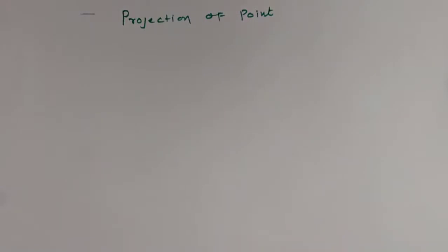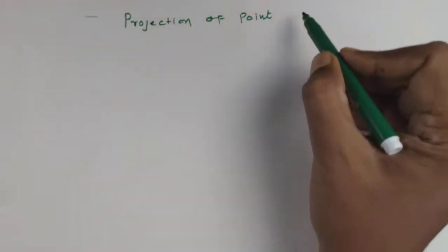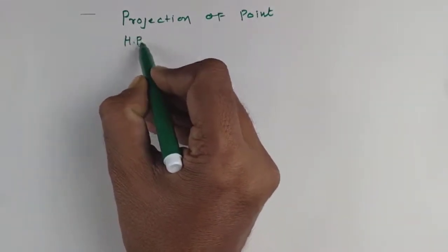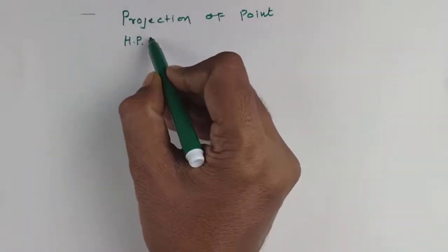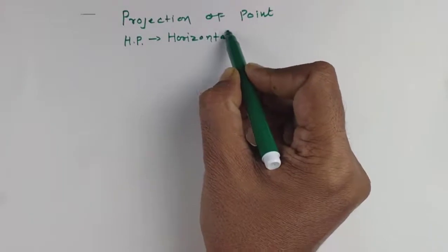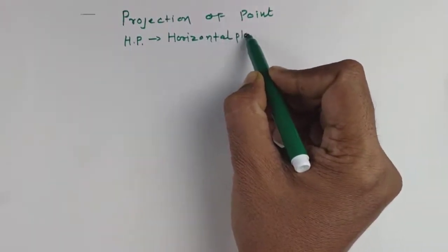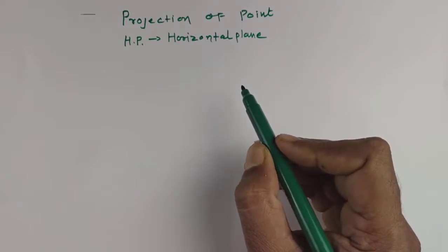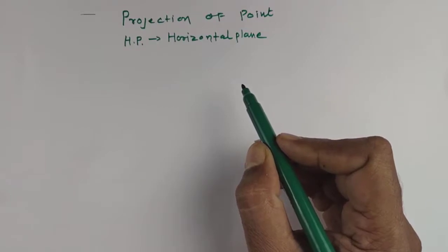Now in this chapter, first we understand there are two planes. One is HP, which we call as a horizontal plane. The plane which is parallel to the ground is called as a horizontal plane.